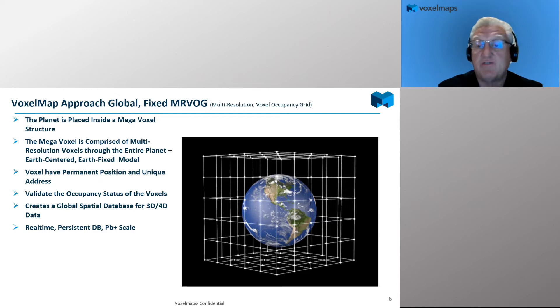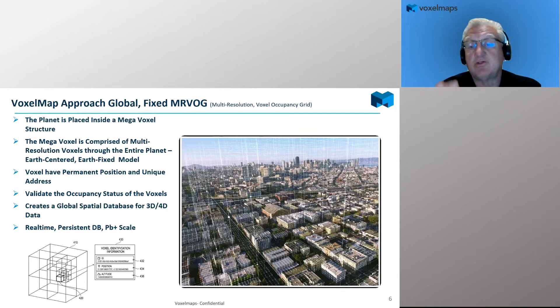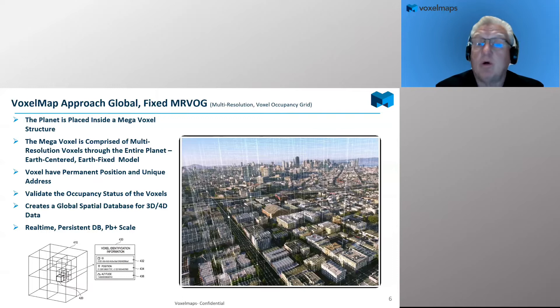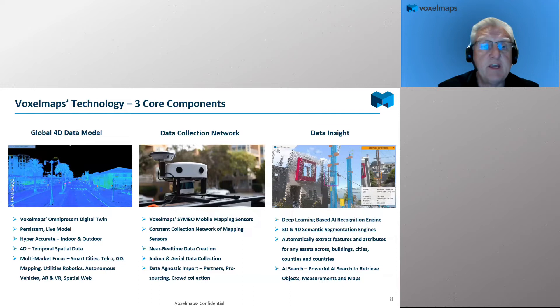We place this voxel model in place — every voxel has a permanent position and a unique address. We then validate the occupancy status of each voxel. If there's nothing within a voxel — just air — we create a nine-meter voxel. But when it gets down to having objects or feature classes within that voxel, we get it down to between one to four centimeters. This creates a global, both above and below ground, geodatabase for 3D and 4D data. It's a real-time, persistent database that supports petabytes at scale.